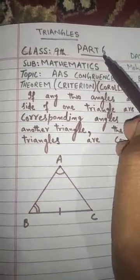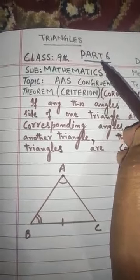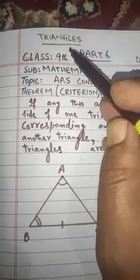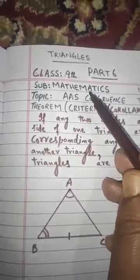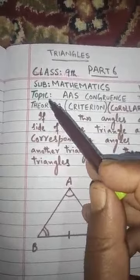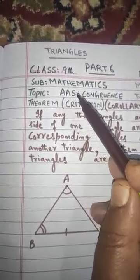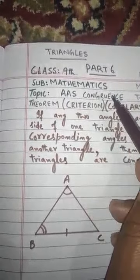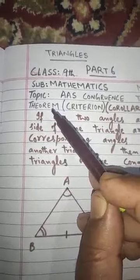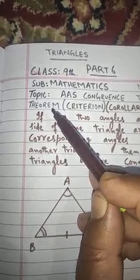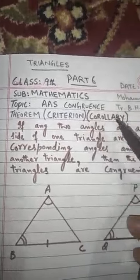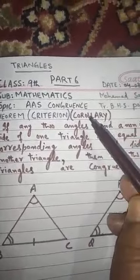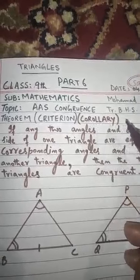Today is our lecture number six from the chapter Triangles in ninth class mathematics, and our today's topic is angle-angle-side congruence theorem, or we can say criterion, or we can also say it as corollary.